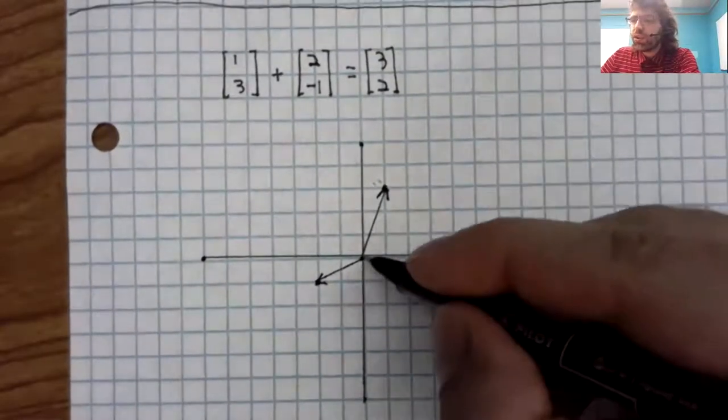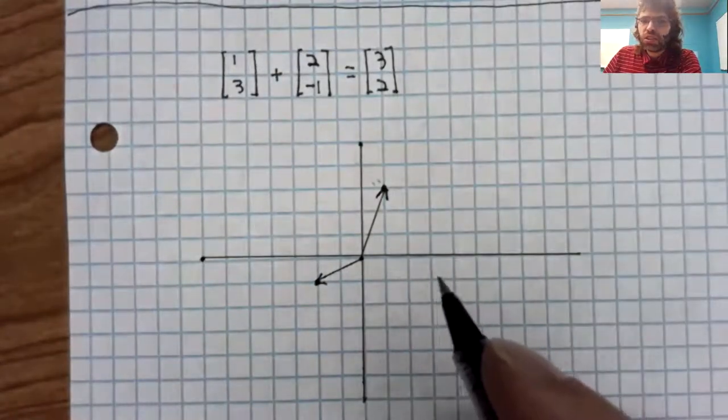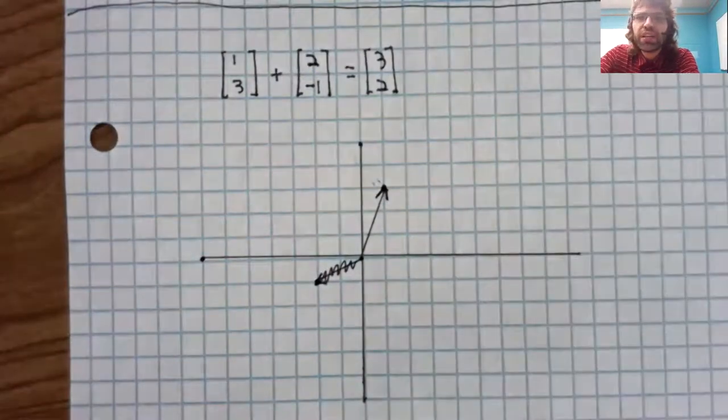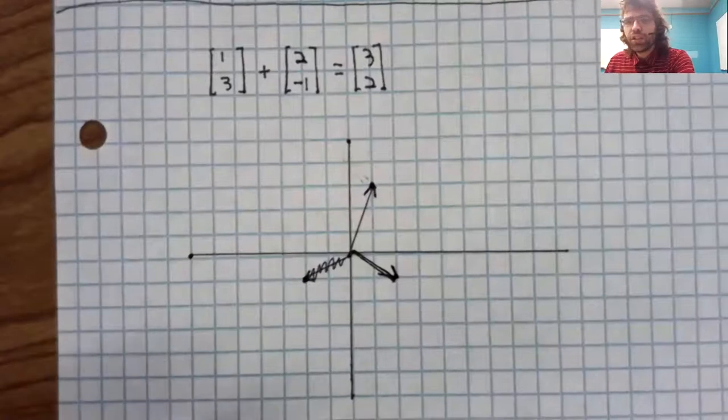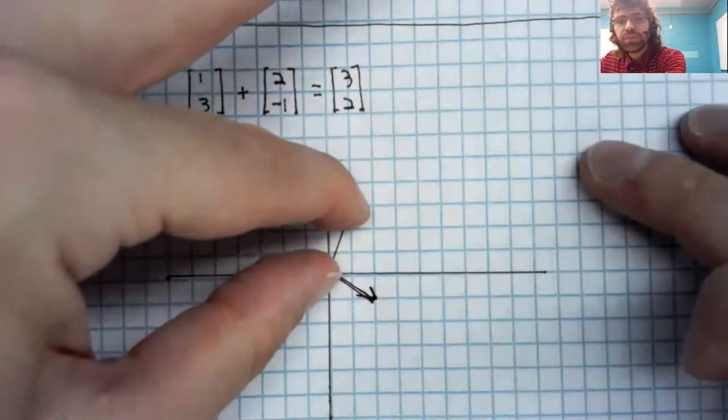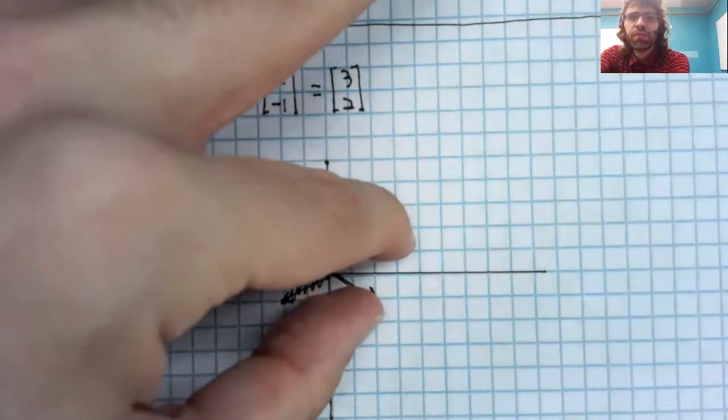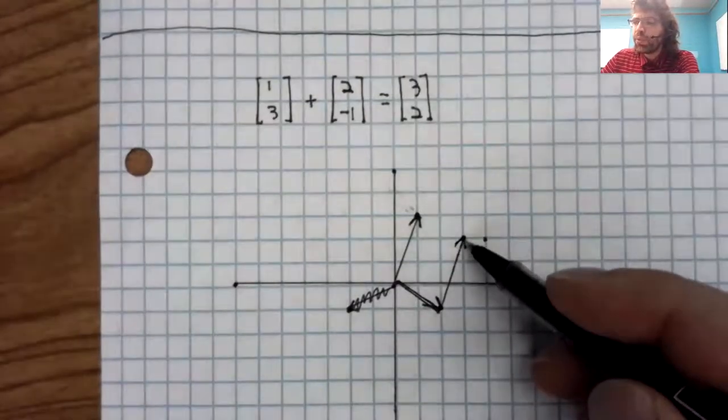Here's the vector one, three. Here's the vector two, negative one. And if you take this line segment and move it over here, well, you wind up here.